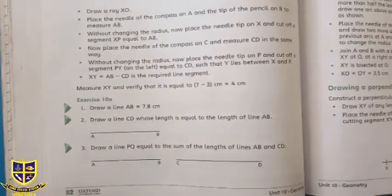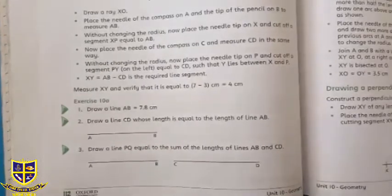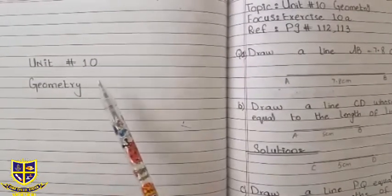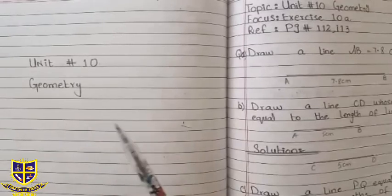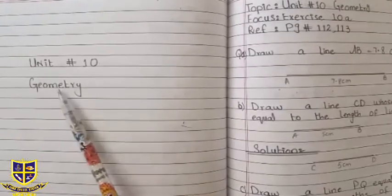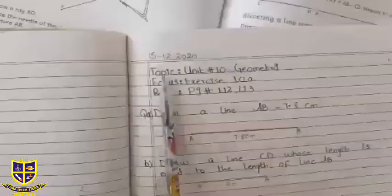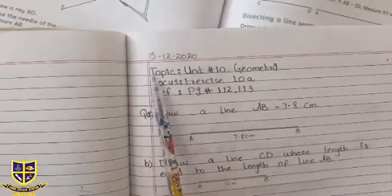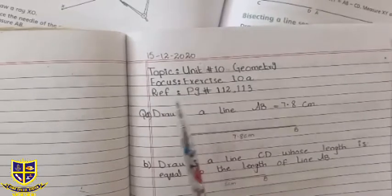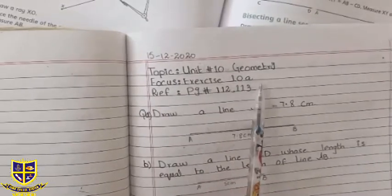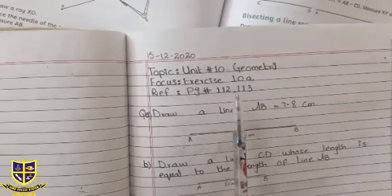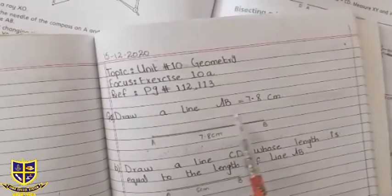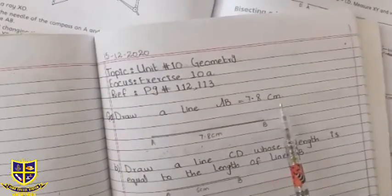Now take out your copies. First you write unit number and unit name on separate page which is your title page: Unit 10 Geometry. Next page, first you write date 15/12/2020, topic Unit number 10 Geometric, Exercise 10a, reference page number 112 and 113. Question number one is draw a line AB is equal to 7.8 cm.